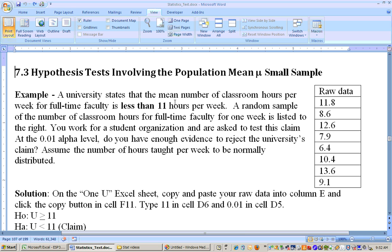It says the university states that the mean number of classroom hours per week for full-time faculty is less than 11 hours. Less than 11 hours tells me that this is an alternate hypothesis that they're giving me, less than 11 hours, and it's about the mean. So if mu is less than 11 is the claim right there, the alternate hypothesis. That automatically makes this a left-tailed test and automatically makes the null hypothesis mu is greater than or equal to 11.